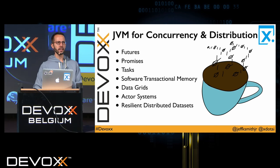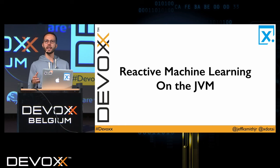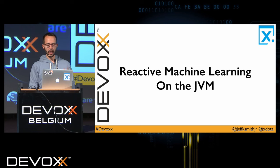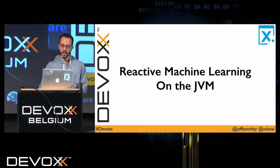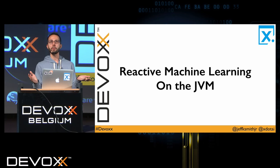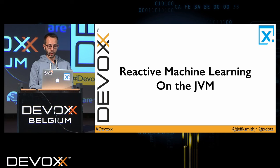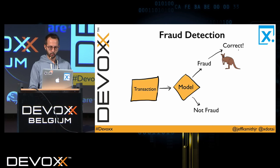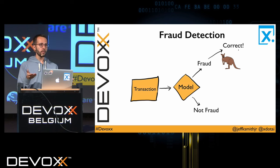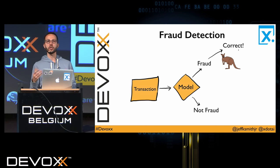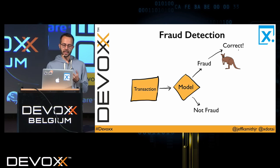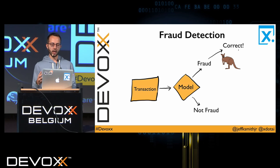Let's get into a more detailed example. I'm going to show just one example on the JVM and then launch off into other runtimes. The first example is Kangaroo Capital — the largest credit card organization within Australia, serving the marsupial community. The problem we're going to work with is their fraud detection model. Fraud detection is a classic data problem you can use machine learning to solve — we're trying to build a model that helps decide, given a transaction, whether it was fraudulent or not.